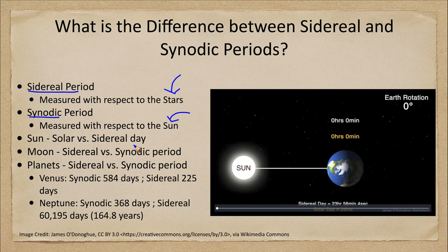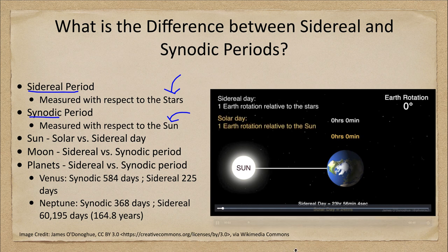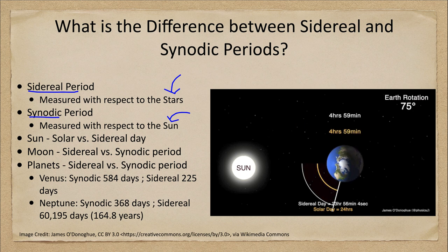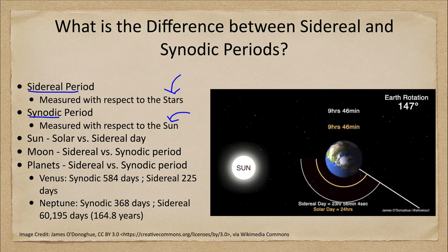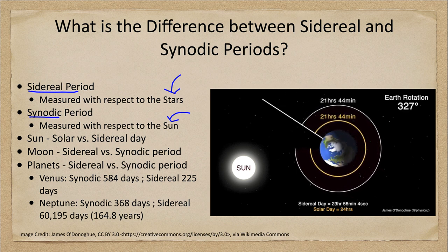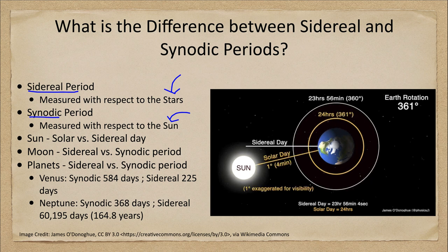So let's start looking at the sun first. We have a video clip to look at here, so let's go ahead and watch that. As this moves, a sidereal day is relative to the stars, a solar day is relative to the sun. As Earth rotates here, it's not staying still, it's moving slowly around. We'll see those white lines connect first — there is the sidereal day — but the sun is not yet back into the same spot.